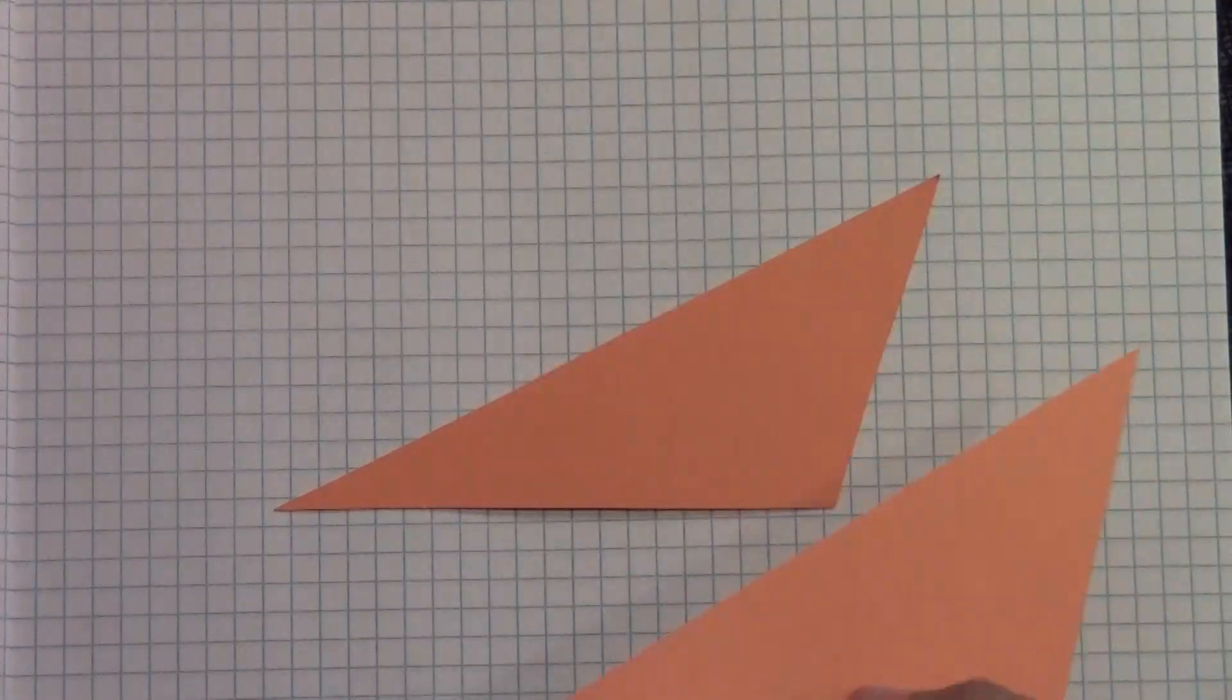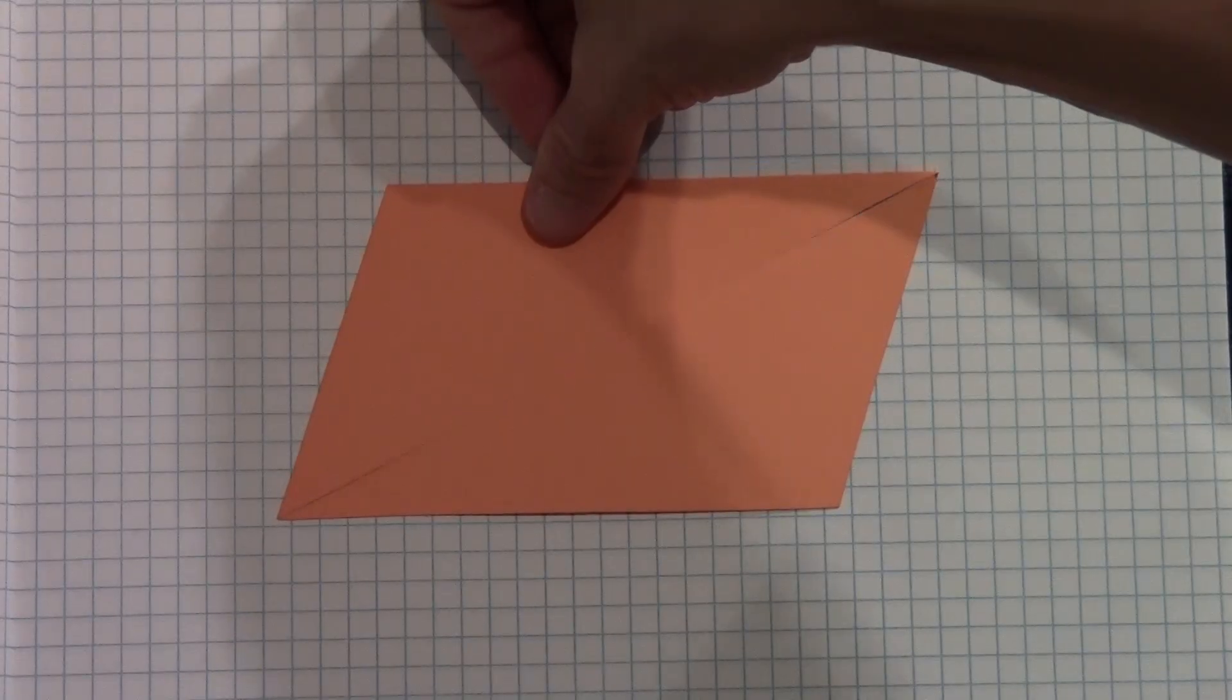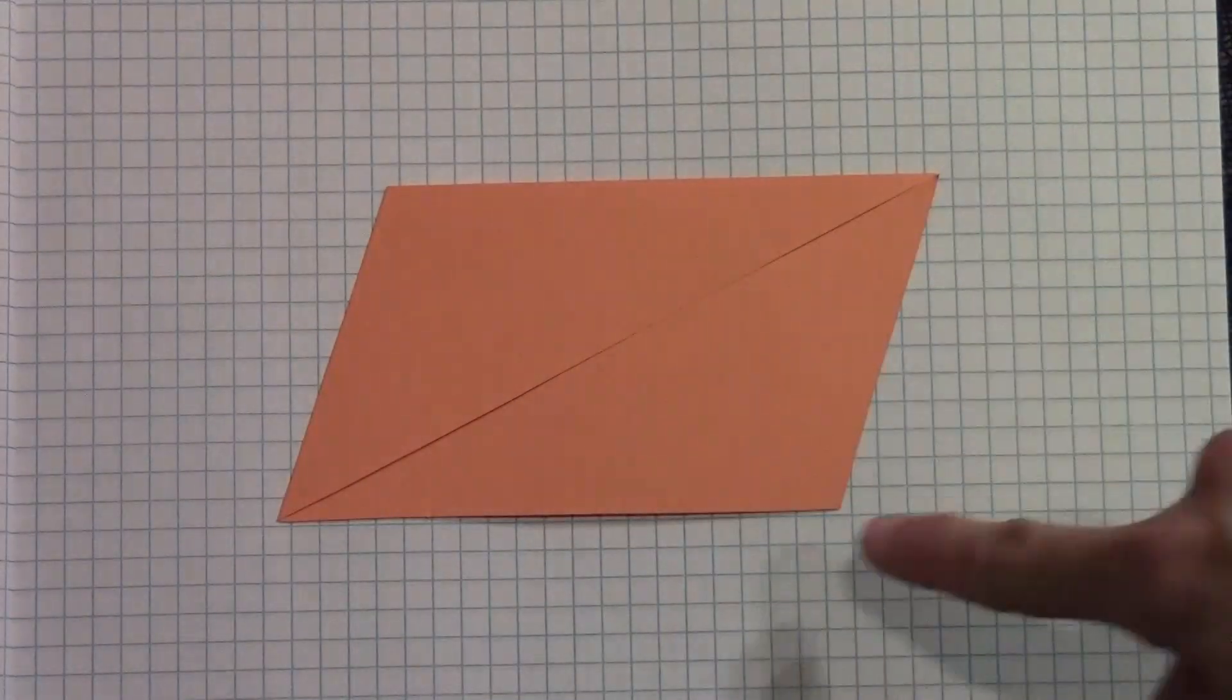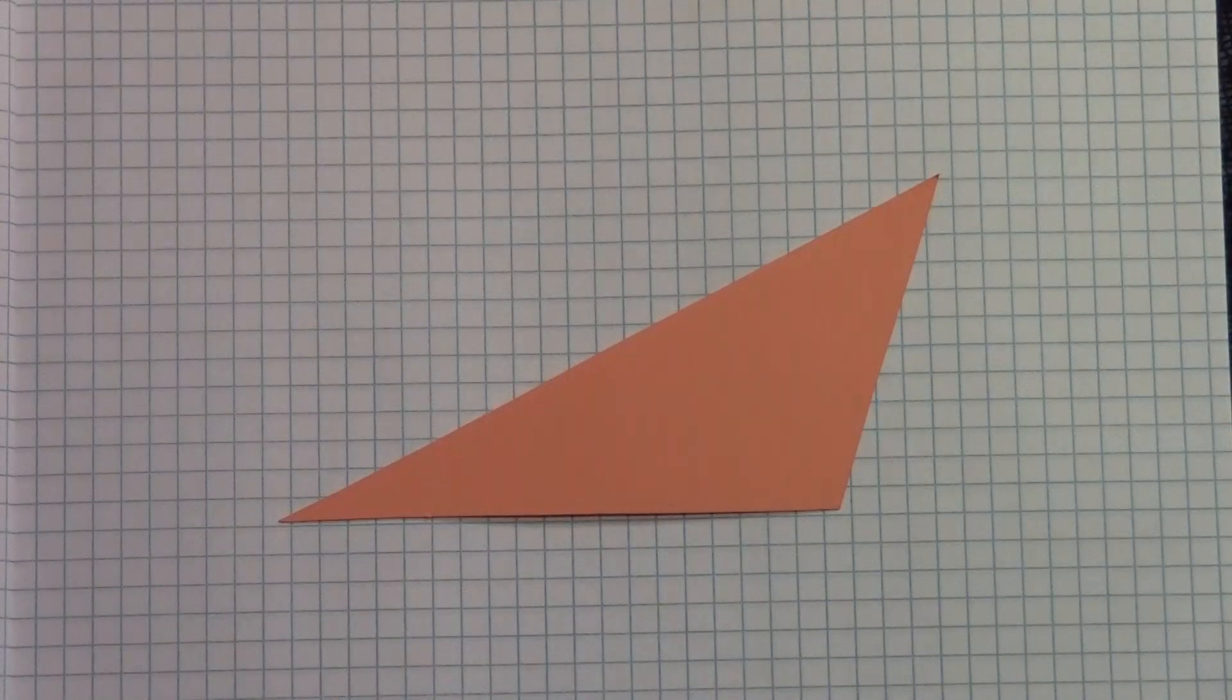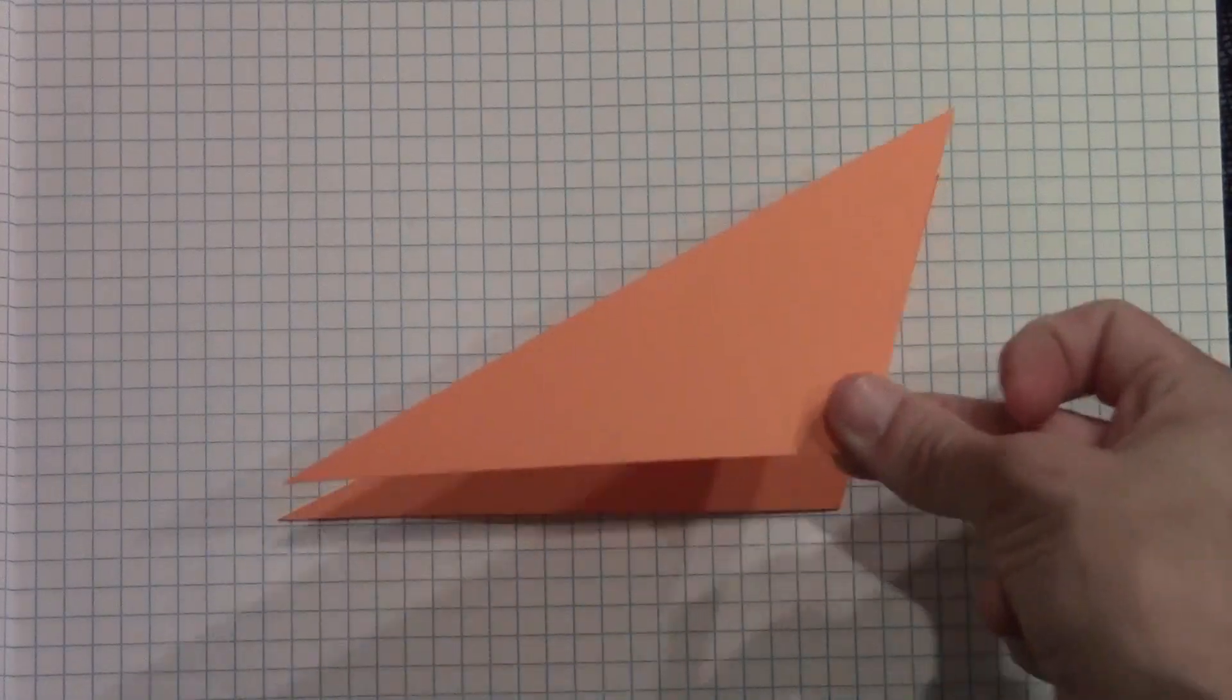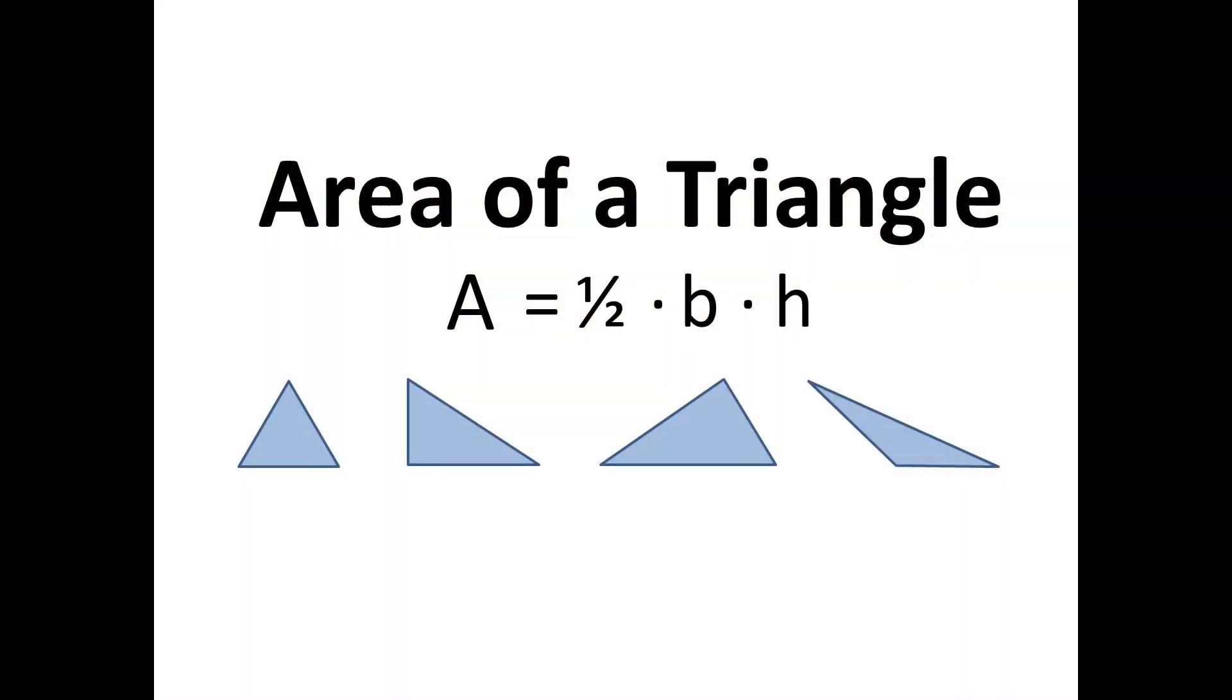Let's copy and rotate this triangle just like we did before. But this time, instead of getting a rectangle, we get a parallelogram. You know that the area of a parallelogram is base times height, and half of a parallelogram is a triangle. So, no matter what angles are in the triangle, the area must be 1 half base times height.